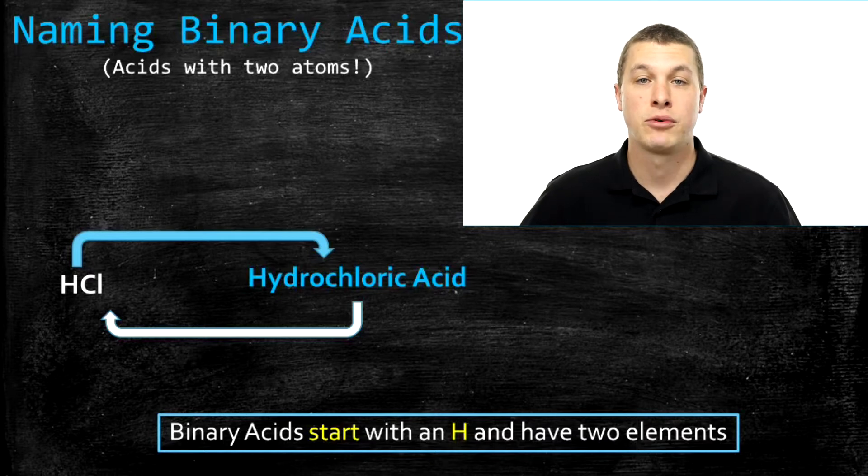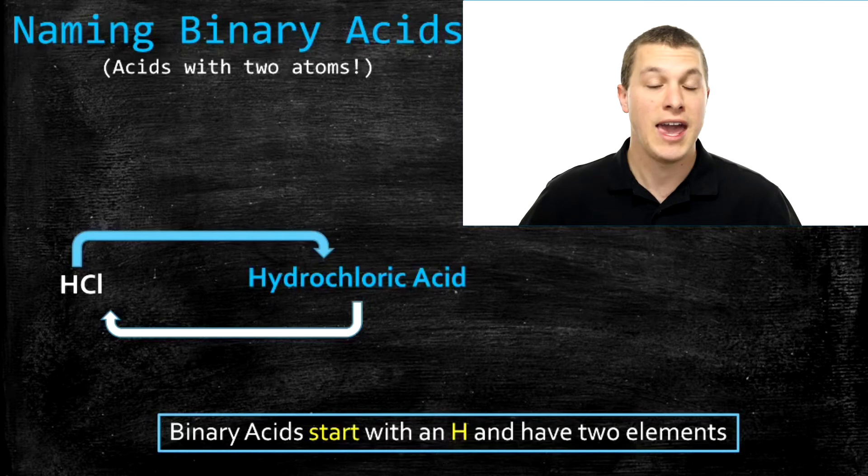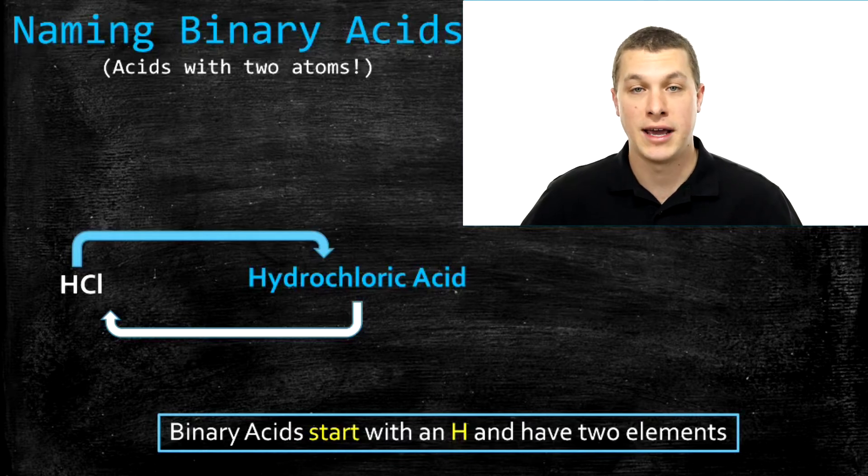A binary acid is anything that releases hydrogen ions into solution when you dissolve it and contains only two elements. So typically you'll see an H followed by another element. And when you see that, you know that's a binary acid.